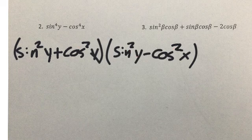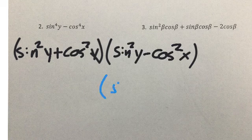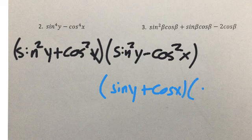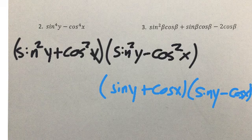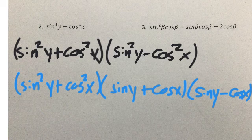However, this set of parentheses is a difference of squares again, so I have to factor this part as a difference of squares. So that becomes sine of y plus cosine of x times sine of y minus cosine of x. And so my final answer is going to be sine squared of y plus cosine squared of x times sine y plus cosine x times sine y minus cosine x.